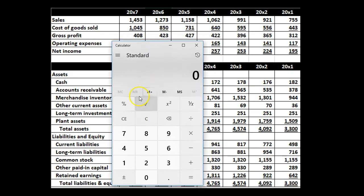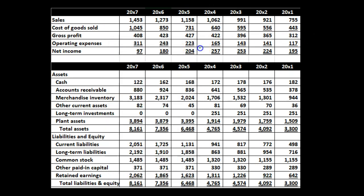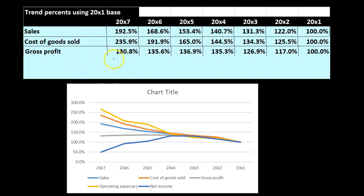We can do the same thing for gross profit: 408 in 2000x7 divided by the base year gross profit of 312 gives 1.30, so 130% on the gross profit. On the graph, notice that the sales line is going up, but the cost of goods sold line is going up at a faster rate than sales. The gross profit line — the gray line — is therefore dipping down. Sales going up: good. Cost of goods sold rising faster: bad. As a result, gross profit is starting to decline.